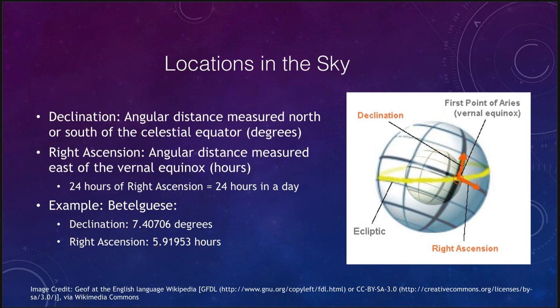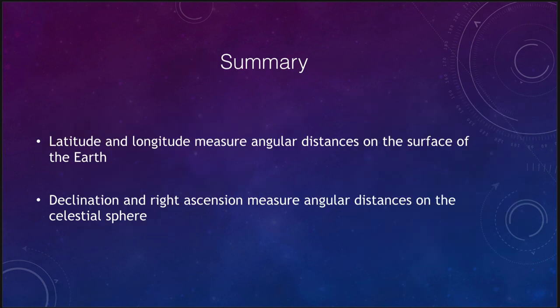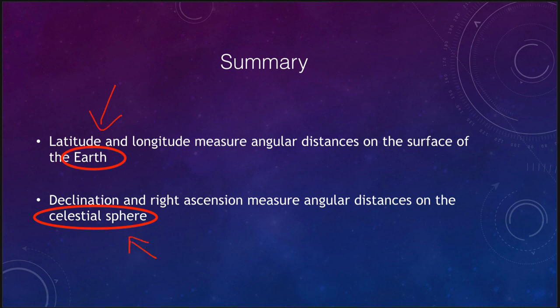Let's review what we've covered. We looked at latitude and longitude, which measure distances on the surface of the earth, and at declination and right ascension, which measure positions on the celestial sphere. Declination and latitude are very similar, as are right ascension and longitude — but remember that right ascension is measured in hours, whereas longitude is measured in degrees. That concludes our discussion of coordinate systems here on the earth and in the sky.